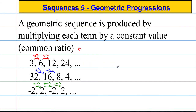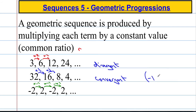Now the first sequence that we have here is said to be divergent. The reason is because it keeps growing — it's getting bigger and bigger and heading towards infinity. The sequence below, however, is said to be convergent. The only way that a sequence can converge is if r is between minus 1 and 1. If r is outside of this particular range, then the sequence will ultimately diverge.